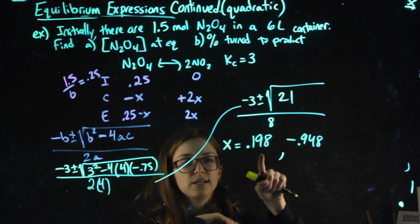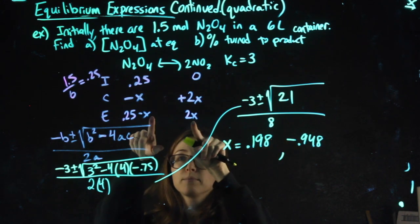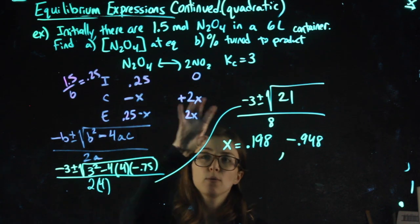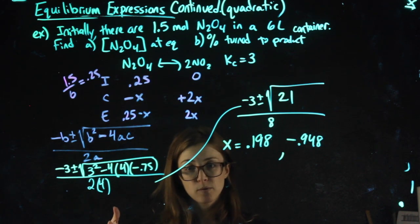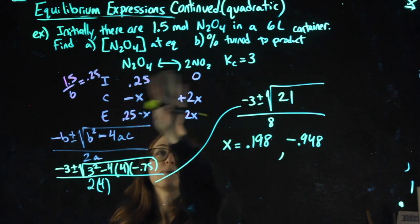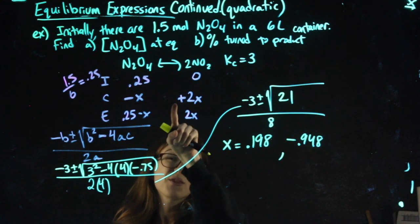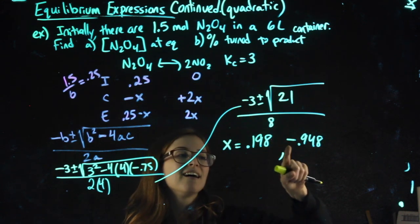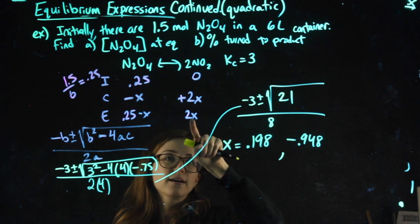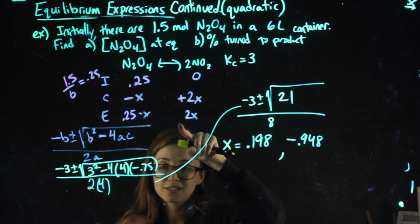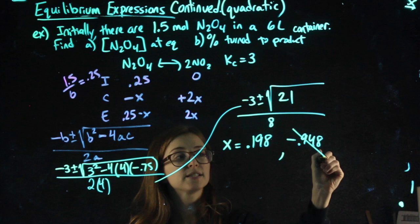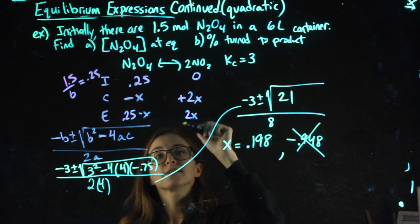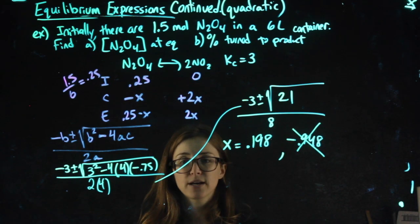Only one of these, one of our x's, when plugged in to the equilibrium row will get us all positive answers. That's what we want. In this case, because of how I set it up, because I put the plus sign on the right side, if I plug in a negative number here, multiplying it by 2, it's still going to be negative. So this isn't going to work out because I'll end up with negative equilibrium values.